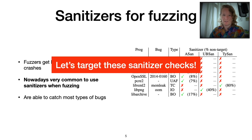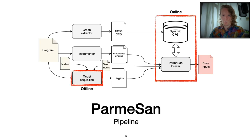What we're going to do is actively target these sanitizer checks through fuzzing. That's where Parmesan enters the game. Parmesan consists of two main phases, an offline phase and an online phase with three main components.